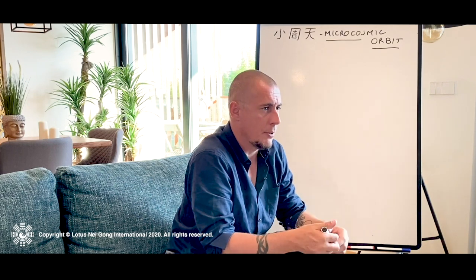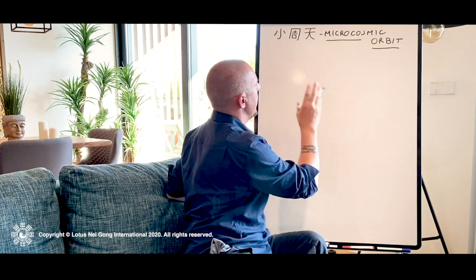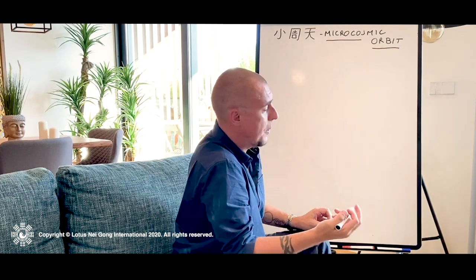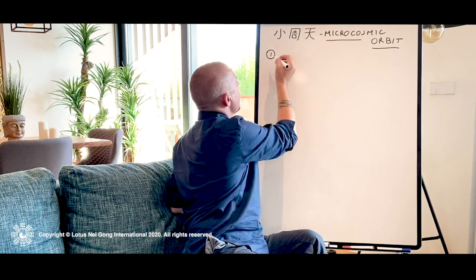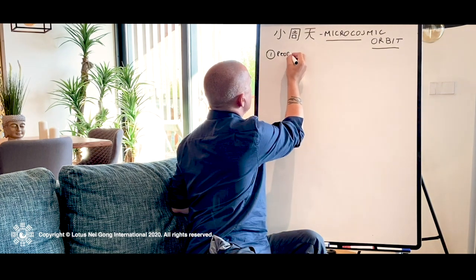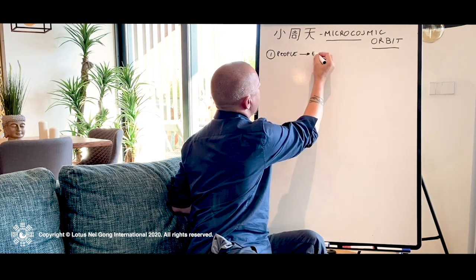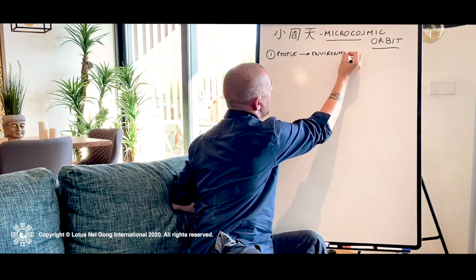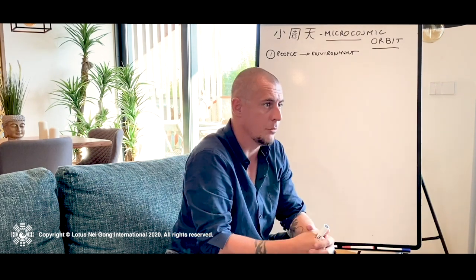To understand the basis of the microcosmic orbit, we need to first understand some of the reasons why people practice it. Philosophically, the first reason is that people are essentially an integral part of the environment. This is one of the first rationales behind the use of the microcosmic orbit. Because there are various rotations that take place within the larger heaven — the environment, within the planets and the stars — these various seasonal cycles and daily cycles must be the same rotations taking place on the inside of the body.